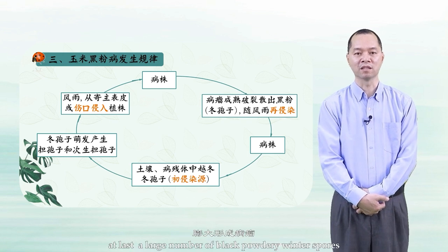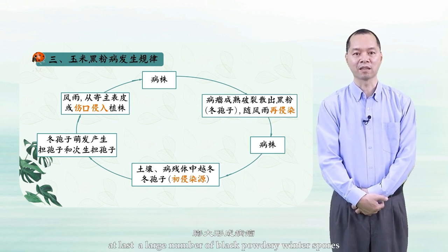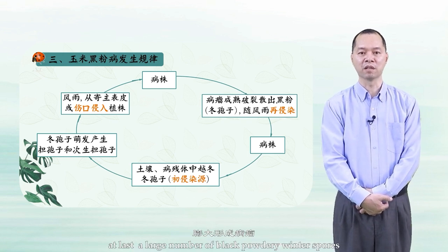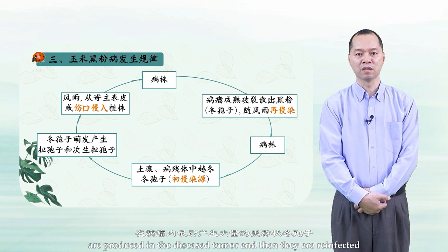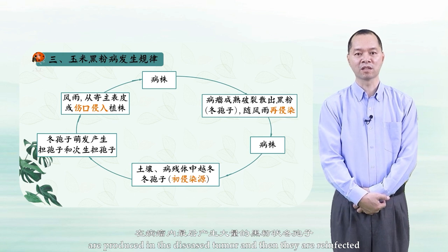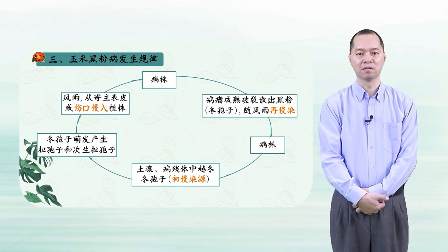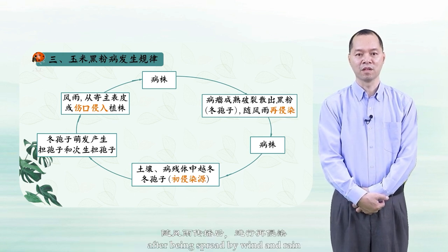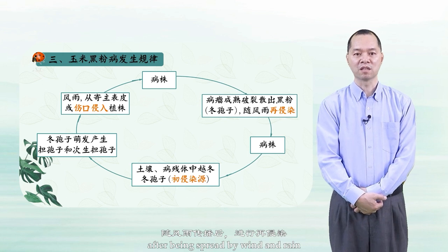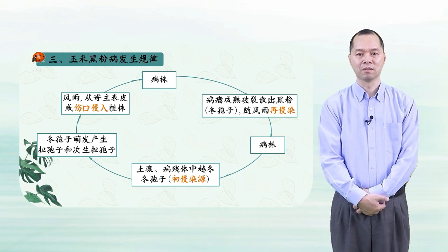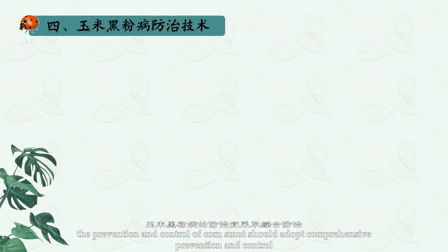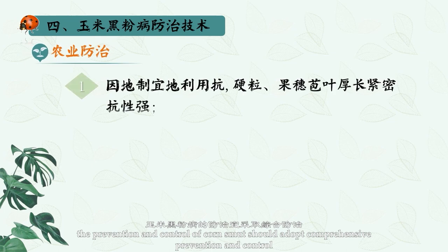At last, a large number of black powdery winter spores are produced in the diseased tumor, and then they cause reinfection after being spread by wind and rain. The prevention and control of corn smut should adopt comprehensive prevention and control measures.